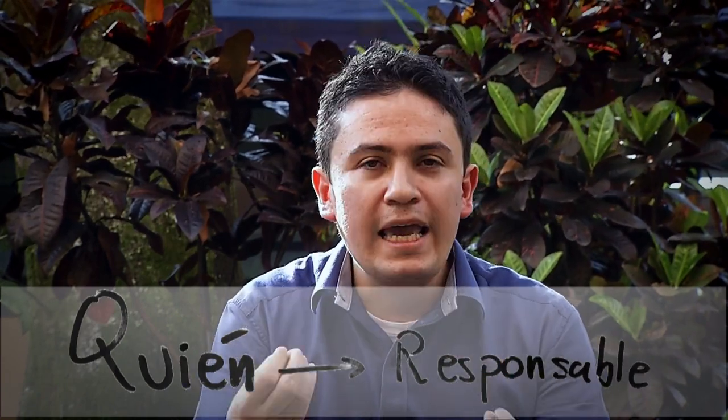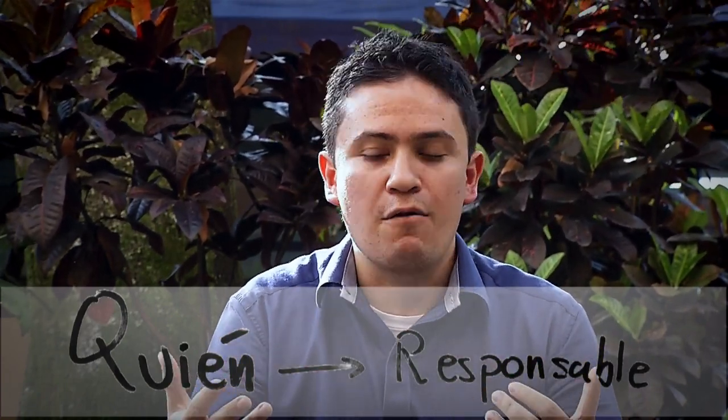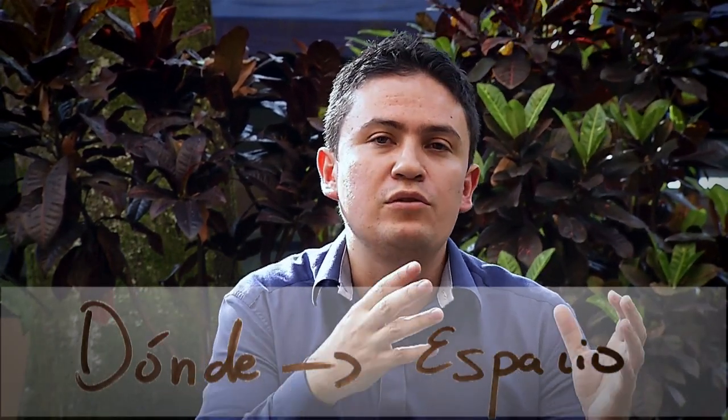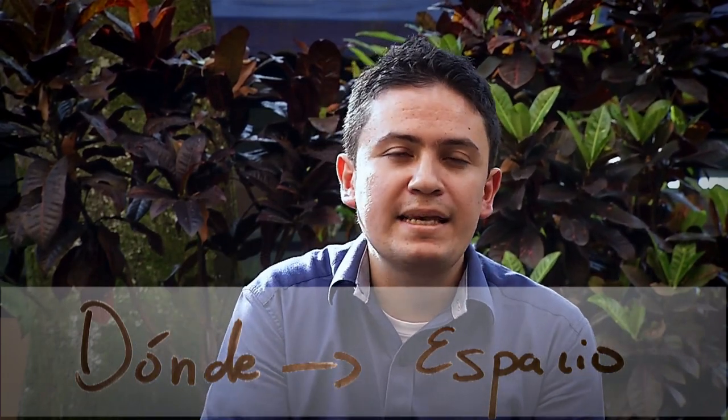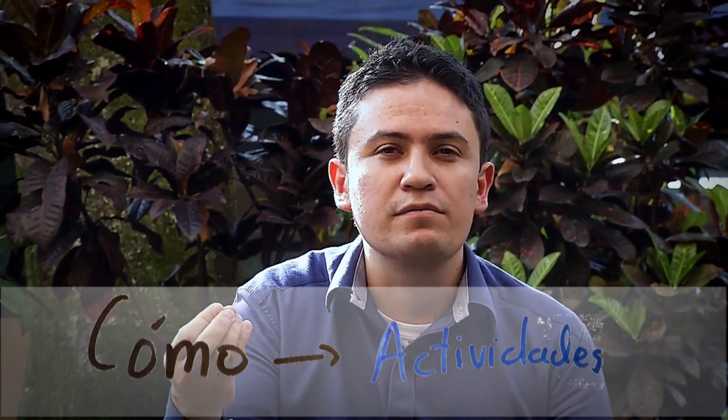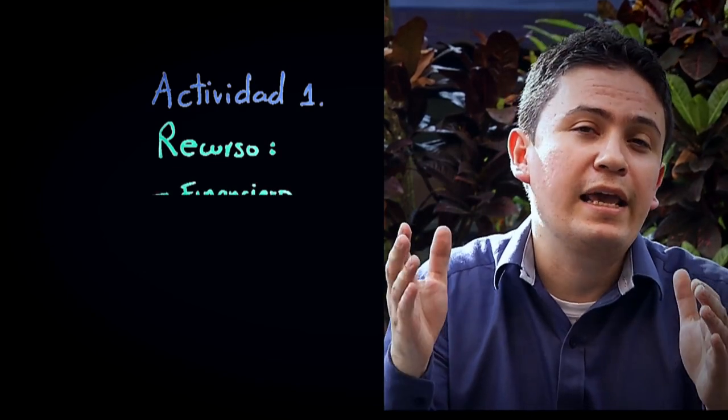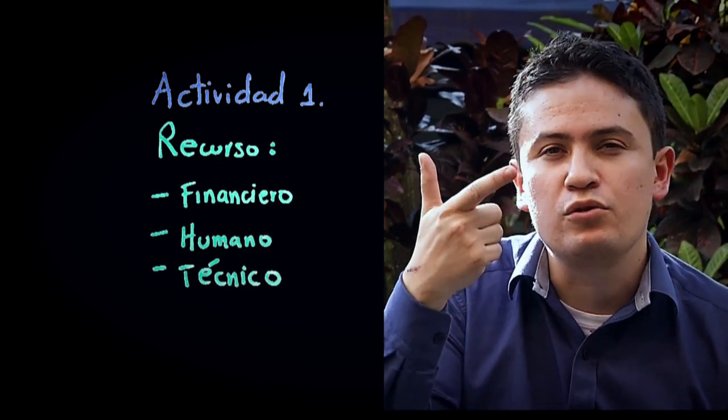Tres: ¿quién? El responsable del proyecto; quién o quiénes se van a encargar de que el proyecto se lleve a cabo. Cuatro: ¿dónde? El dónde es un espacio físico, una institución, una comuna, una empresa; debe ser muy claro dónde se va a desarrollar. El tiempo: los proyectos no son infinitos, tiene que haber una temporalidad, ya sea seis meses o un año. El cómo: estas son las actividades que se van a desarrollar para cumplir el objetivo, y por cada actividad voy a requerir unos recursos, ya sea personas, infraestructura o dinero.